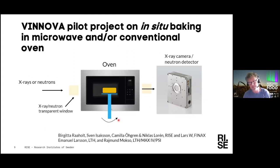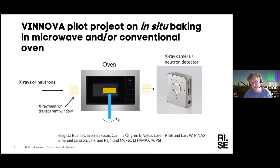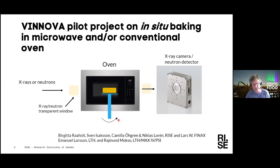This is another Vinnova pilot project — I thought it could be interesting to show since Maria talked earlier. Here we would like to understand more about the baking properties of bread by building a sample environment where we put a microwave oven into the beamline. We could then look with X-ray and neutrons — for instance with X-ray tomography — to see how the system goes from a dough to a final bread. This is work by Birgitta Rahol, Sveni, Saxon, Camilla and me at RISE, Lars Wendegren at Finnext, and Emmanuel Larsson and Raymond Moxer with colleagues at MAX IV and LTH.